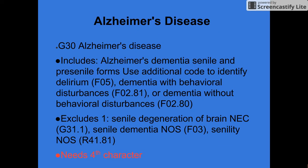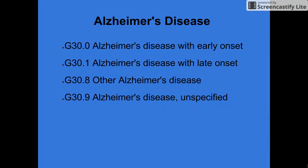Alzheimer's disease is G30. It includes Alzheimer's dementia in both senile and presenile forms, and you use an additional code to identify delirium or behavioral disturbance, with or without. It excludes senile degeneration of the brain not elsewhere classified. These are some examples of the coding of Alzheimer's disease in ICD-10.